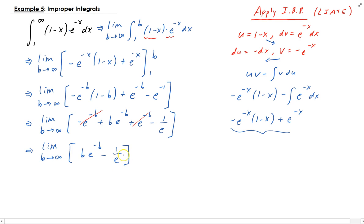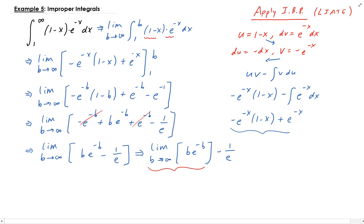Since 1 over e is a constant, we can split this up — the limit of 1 over e is just minus 1 over e. For the remaining limit as b goes to infinity, we can rewrite b·e to the minus b as b over e to the b. If we do a direct substitution, we get infinity over infinity, so we need to apply L'Hôpital's rule.